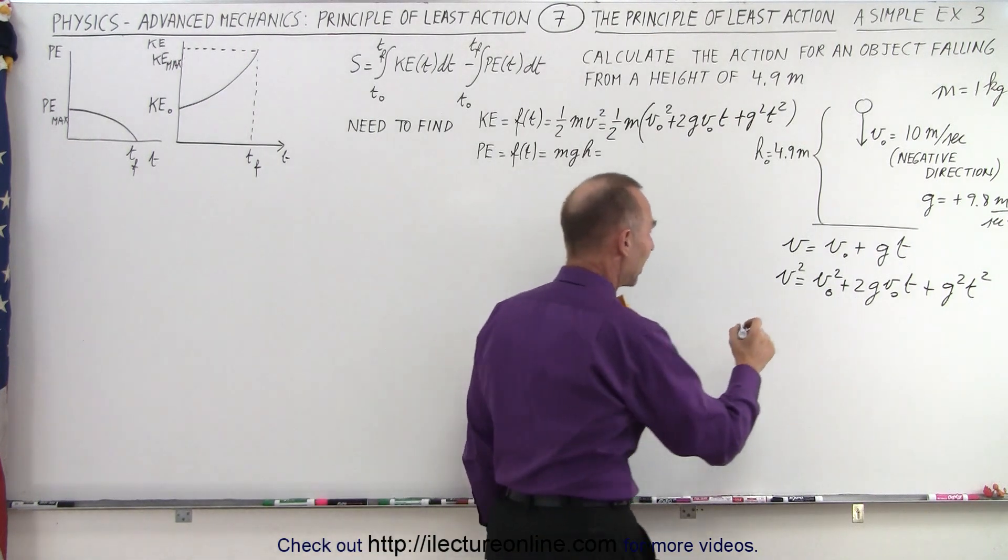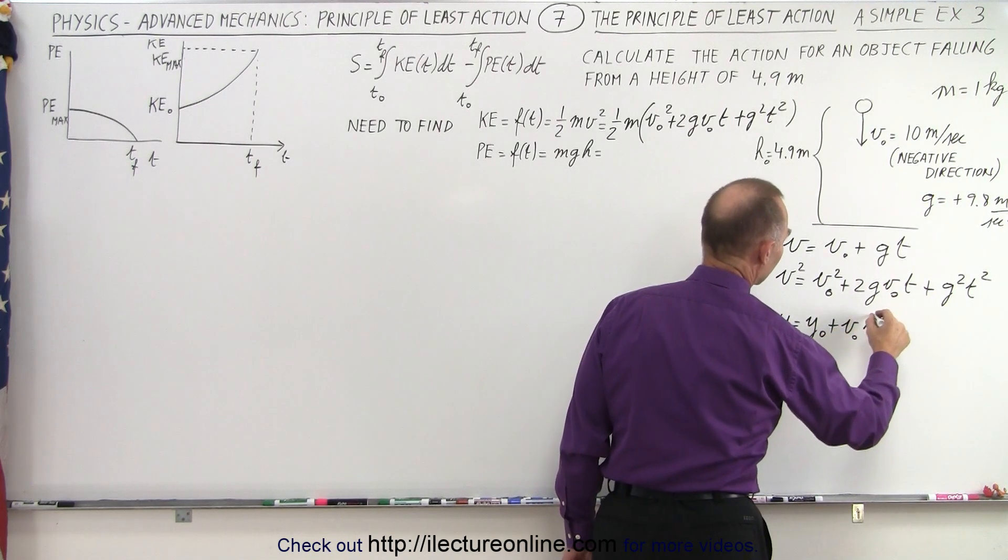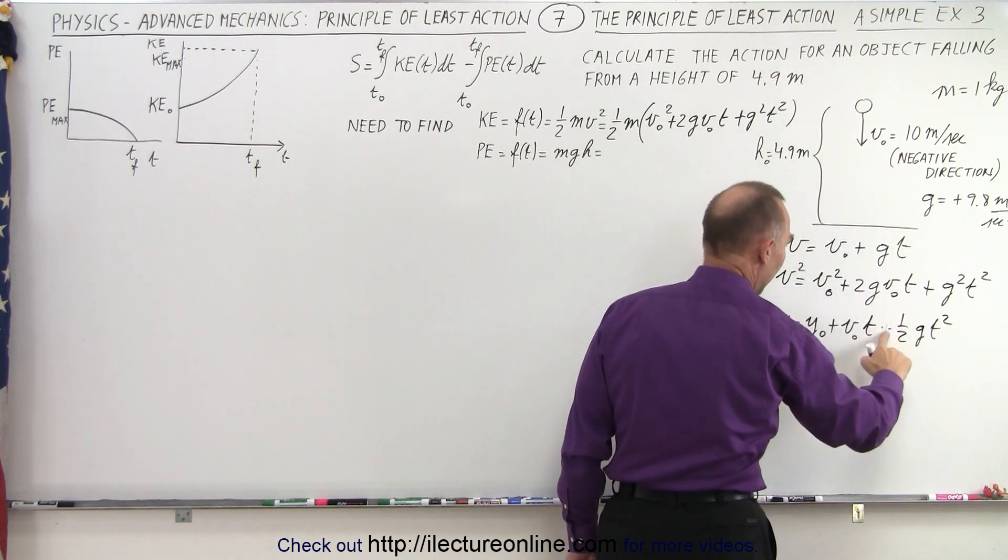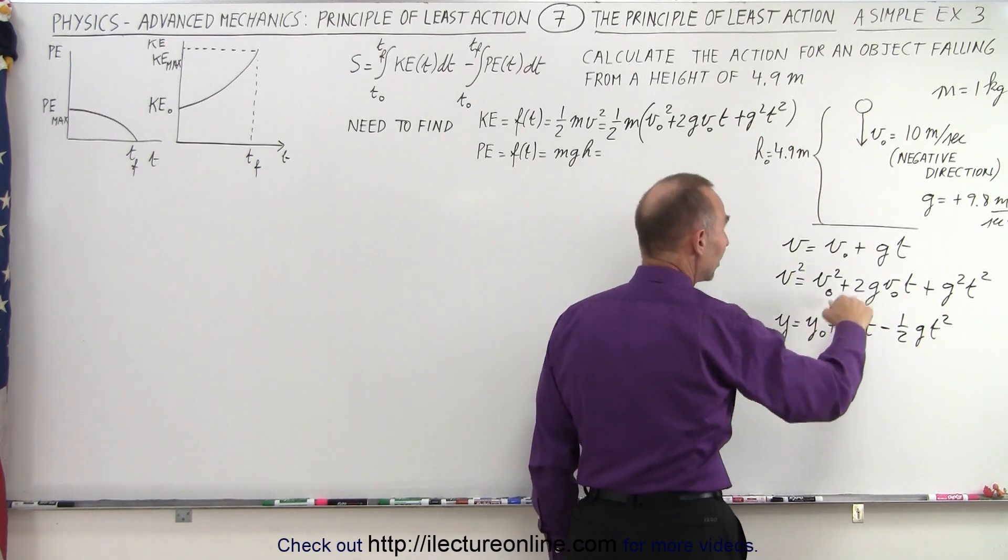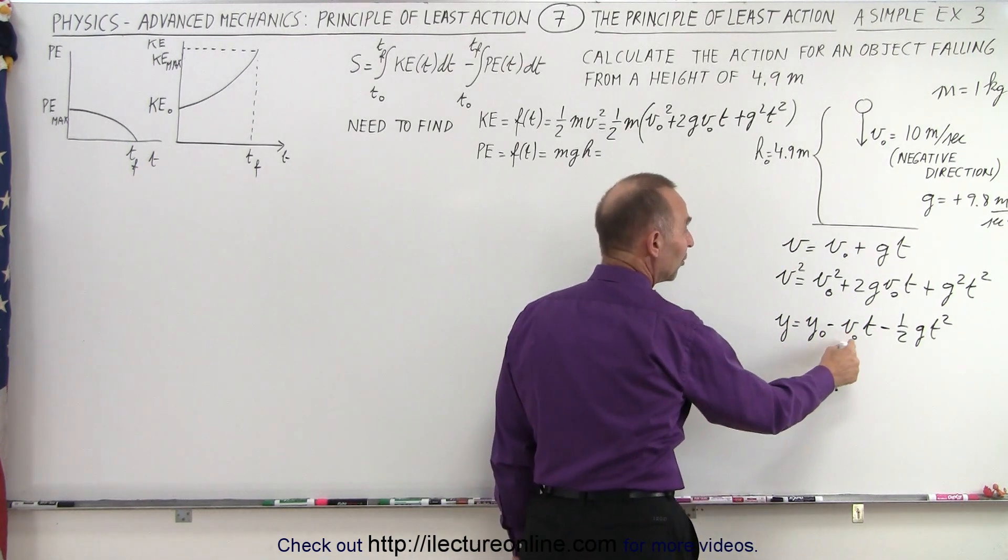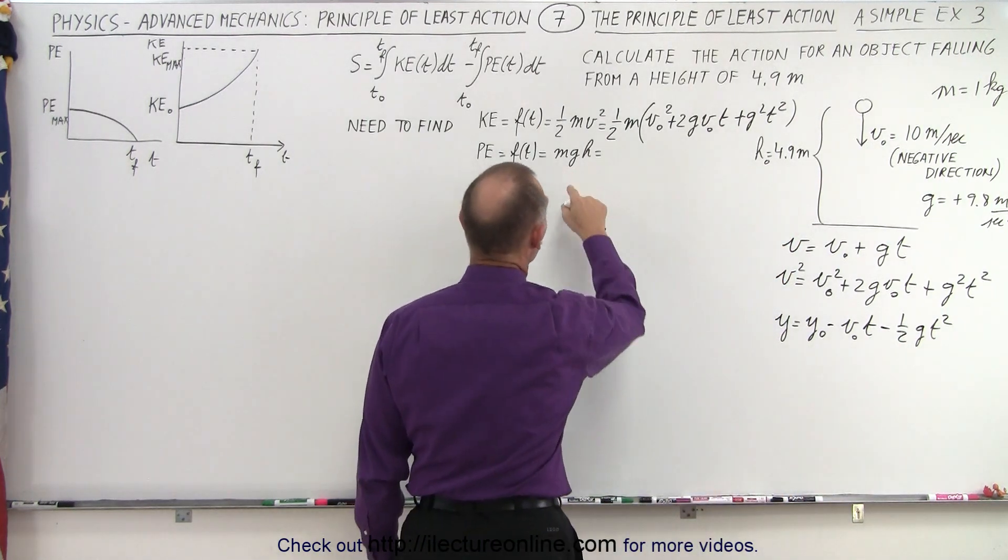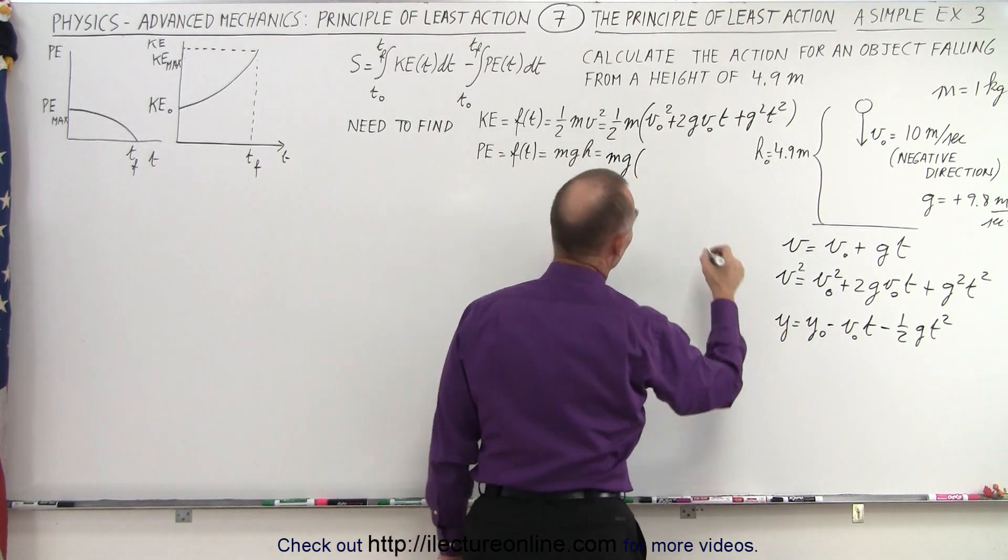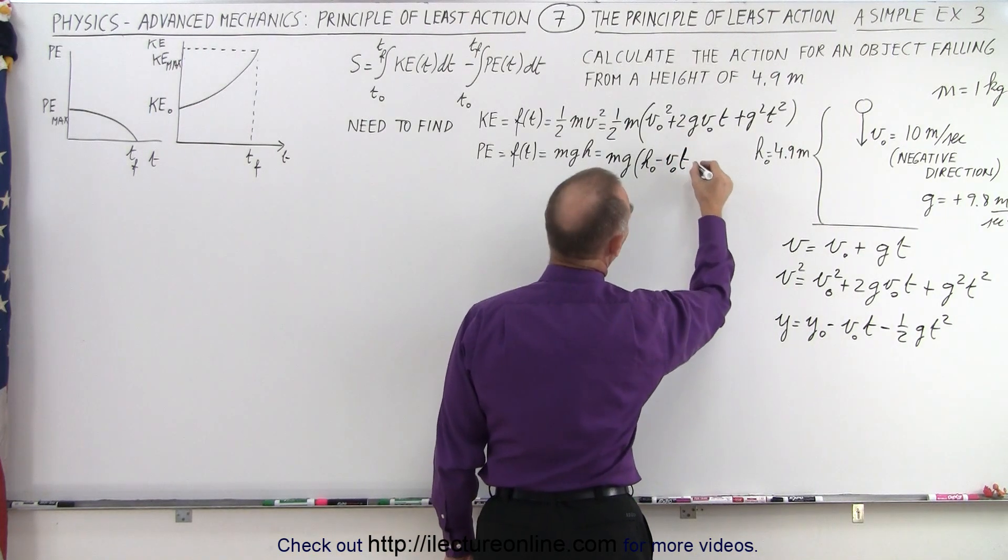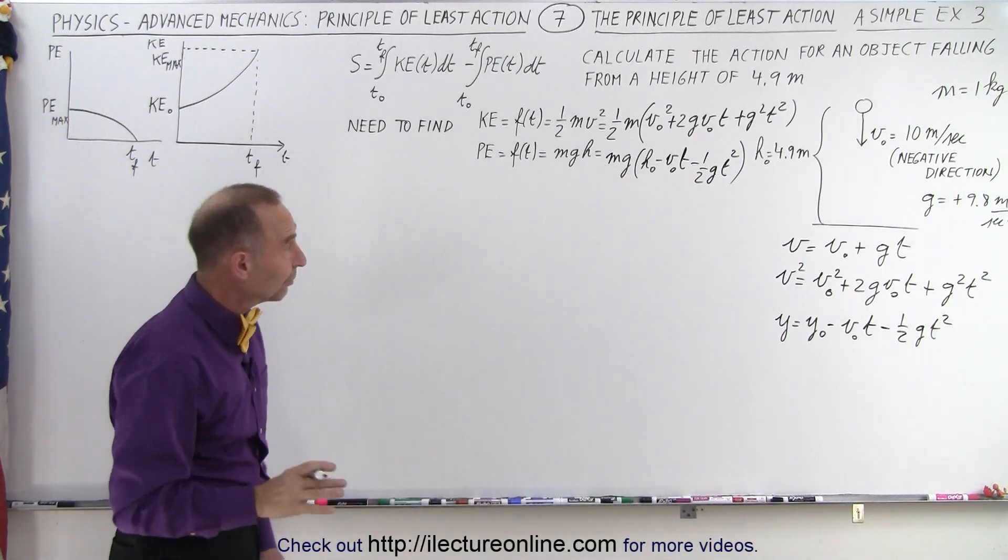Now we need to find the height as a function of time. So here we have y equals y sub-naught plus v sub-naught in the y direction times time plus one half g t squared. Now in this case, since we're moving downward, the height is going to decrease, so we need to make that a negative, and the velocity is in the negative direction, so we also need to make this a negative because we start from an initial height, but it's being decreased by these terms. So we end up with mg times the initial height, h initial minus v initial times time minus one half g t squared like that.